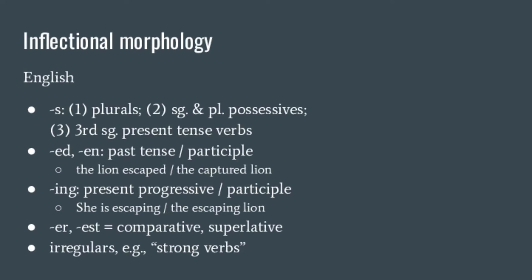English inflectional morphology is pretty simple. We have the -s ending for plurals and possessives, past tense endings -ed or -en, and present progressive / participle forms with -ing. 'She is escaping' — present progressive — or 'the escaping lion' — a present participle used as an adjective, a verbal adjective. Then past participles: 'the captured lion' — the lion that was captured — a verbal adjective. We have -er and -est for comparative and superlative forms. And we have irregular or strong verbs like swim/swam, teach/taught, and so on.